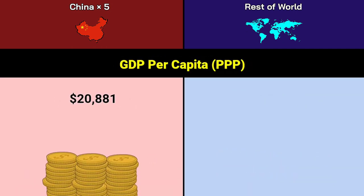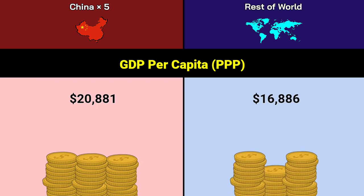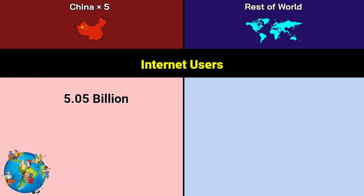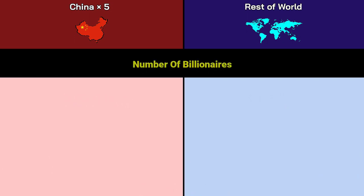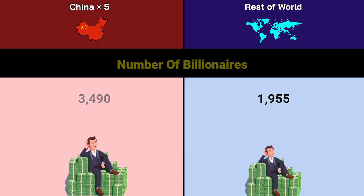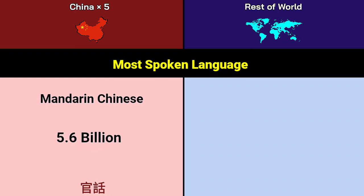Internet users: China 5.05 billion, which is 70.1% of China's population; Rest of World 3.1 billion, 47.6% of rest of world population. Number of billionaires: China 3,490, Rest of World 1,955. Most spoken language: Mandarin Chinese 5.6 billion, English 1.12 billion.